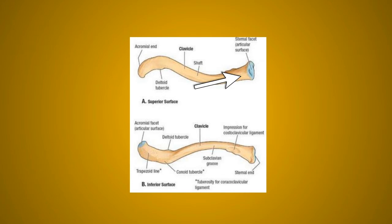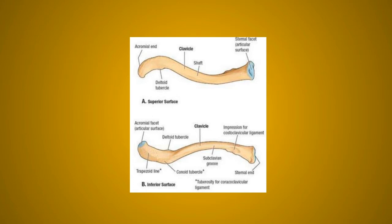The medial two-third part of the shaft is rounded and has four surfaces: anterior, posterior, superior, and inferior. The anterior surface is convex forwards; the posterior surface is smooth; the superior surface is rough in its medial part; and the inferior surface has a rough oval impression at the medial end. The lateral part of this medial two-third has a longitudinal subclavian groove.